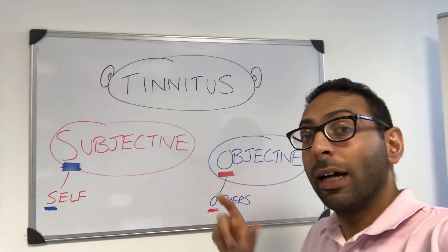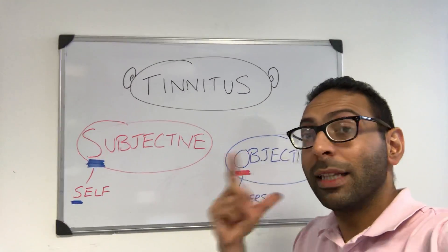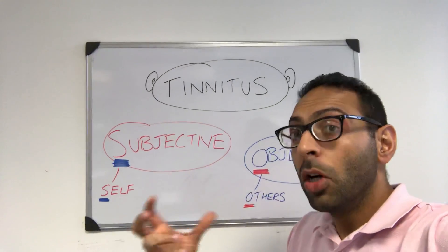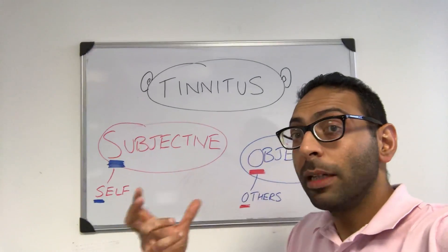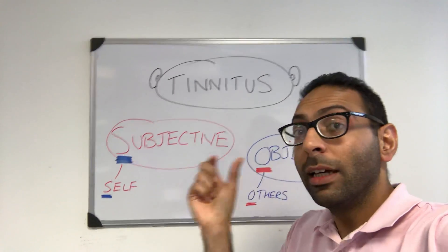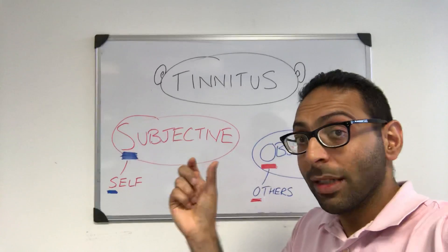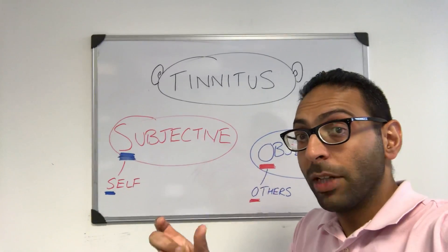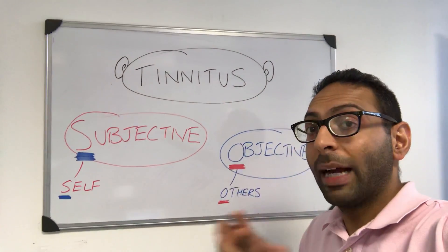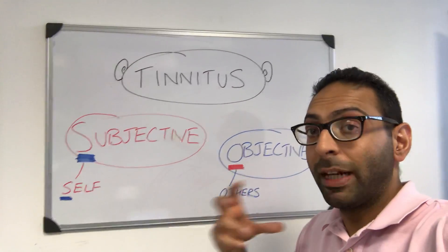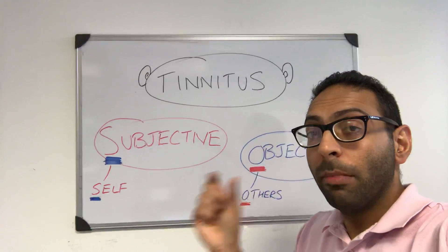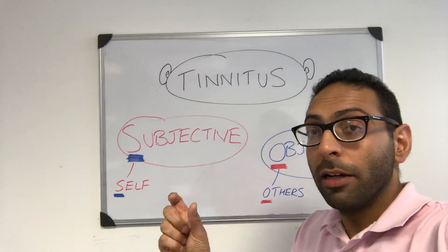Objective tinnitus is when another person can hear the tinnitus as well. Whether it's an examiner or a family member, if you get close enough you can hear the actual noise at the same time as the patient. This is usually due to some kind of vascular problem — it could be an aneurysm, it could be a vascular tumor — and it's much, much rarer.